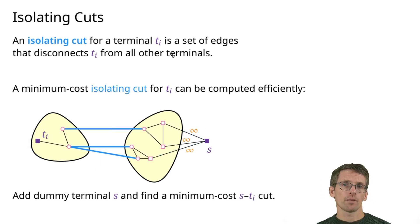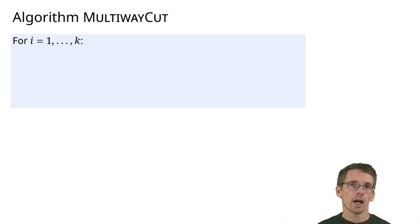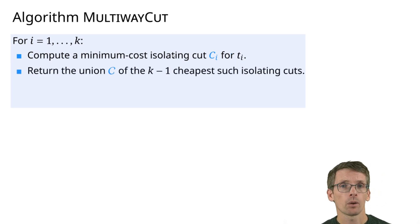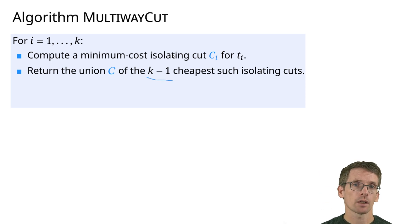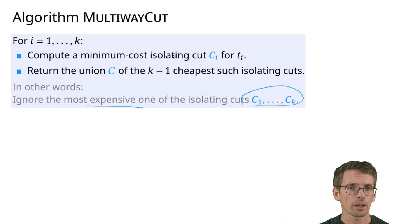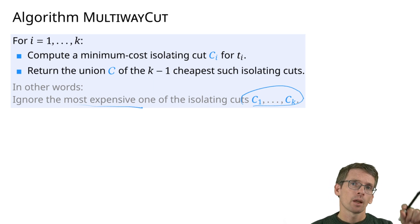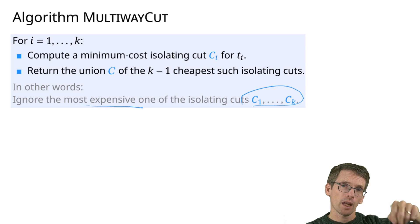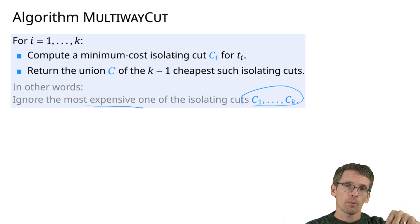The algorithm is very simple: for every t_i we compute a min-cost isolating cut — a cut that isolates t_i from all other terminals. Then we take the union of those cuts. To save cost, we take the union of the k − 1 cheapest isolating cuts, ignoring the most expensive one. This is valid because the k − 1 other cuts already ensure that each of those k − 1 terminals is separated from all others.